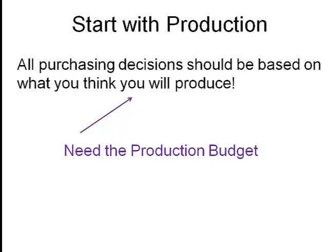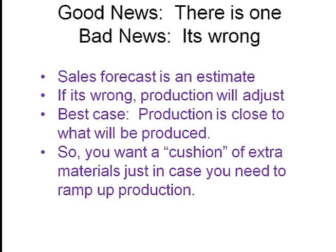If you don't have the production budget, you have to go solve for it first before you can do the materials budget. Now, here's the good news — there probably is a production budget. Here's the bad news — it's wrong. Because it's based on the sales forecast, and the sales forecast is an estimate. So if the production budget is wrong, as sales start rolling out and you realize which direction the error is, production will adjust.